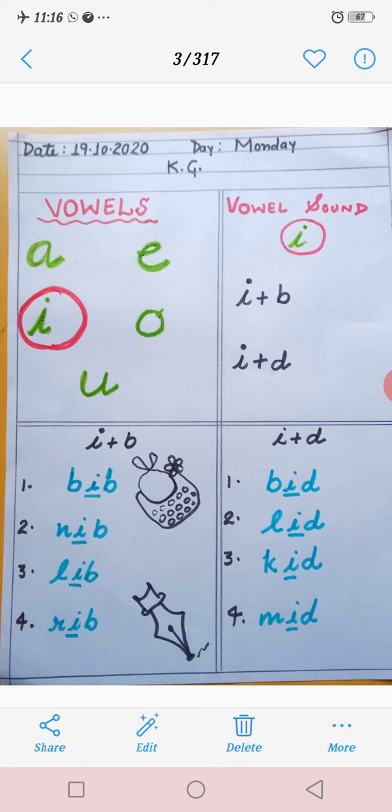5 vowels are there. A, E, I, O, U. Then today I have to take the vowel sound I. So we will learn the vowel sound I.